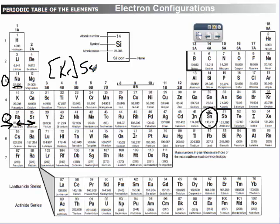And this was the d's. Remember, the d's are one less than the period, so 4d, go all the way through it, so 4d10. Then we go back to the p's. The p's are the same as the period number, so it's 5p2.